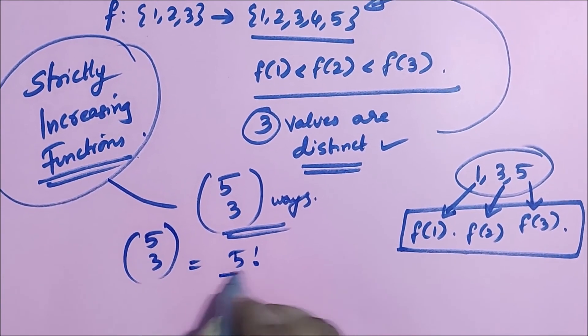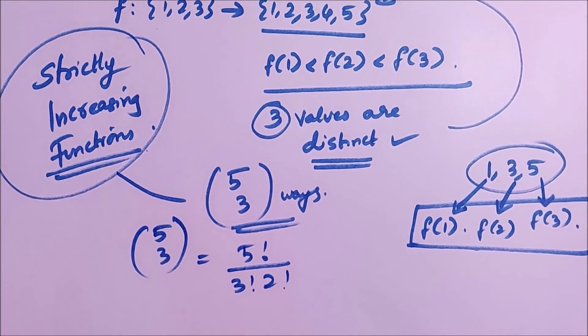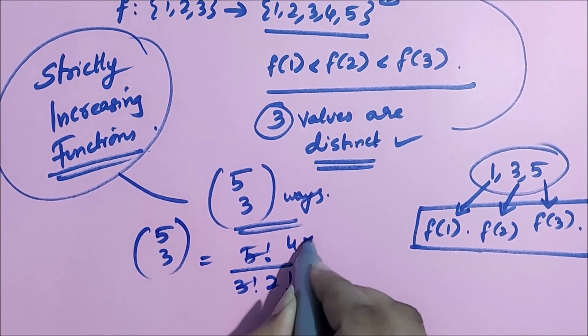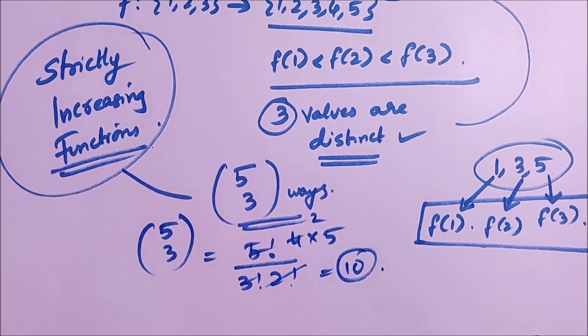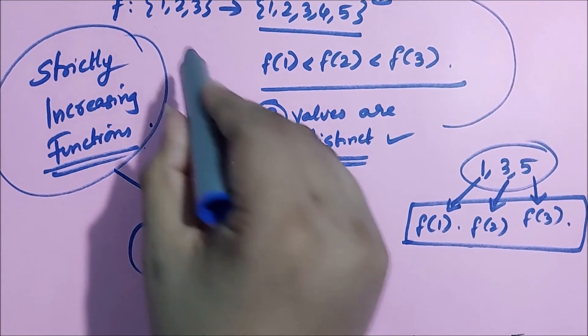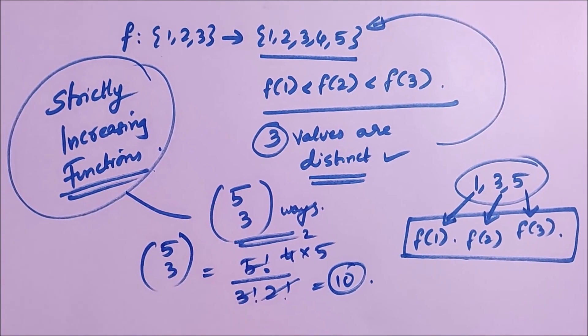5 choose 3 is nothing but 5 factorial by 3 factorial into 2 factorial. 4 into 5 into 2 is 10. So there are 10 strictly increasing functions from 1, 2, 3 to 1, 2, 3, 4, 5.